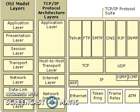Hello everyone, good evening. In the last lecture, I explained about the OSI reference model. This model was a theoretical model, having seven layers. It was a protocol independent standard and no practical model existed based upon this theoretical model.